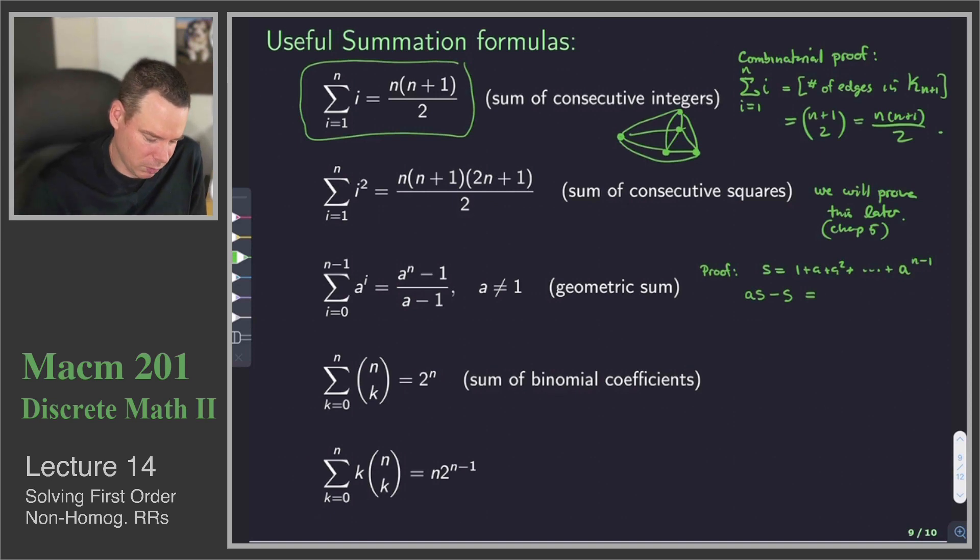If I multiply through by a, then what I basically get is a plus a squared plus dot dot dot all the way up to a to the n. If I subtract off all these terms, there's only two that survive, a to the n and 1. Therefore S is equal to a to the n minus 1 over a minus 1. There's our proof.